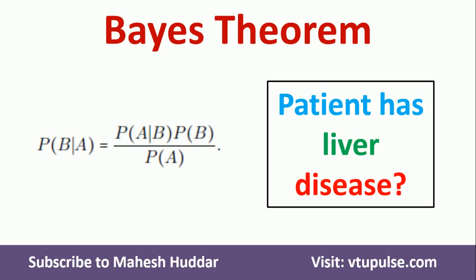Hi, welcome back. In this video, I will discuss how to apply Bayes' Theorem to find the probability that a patient has liver disease given the patient is alcoholic.